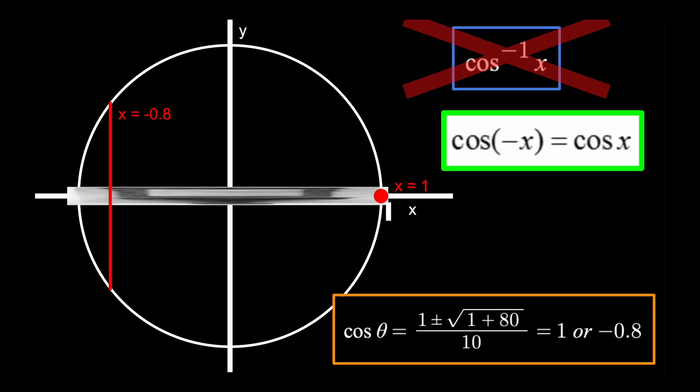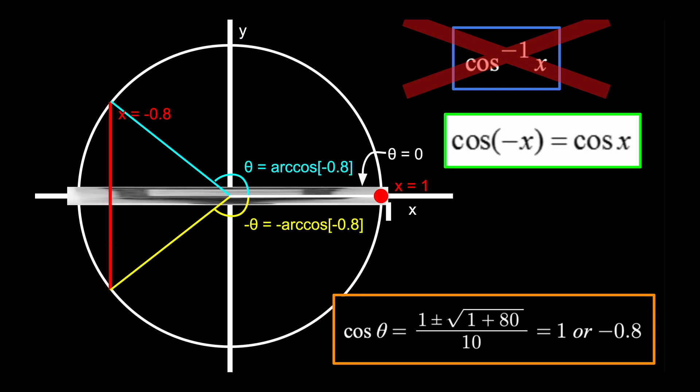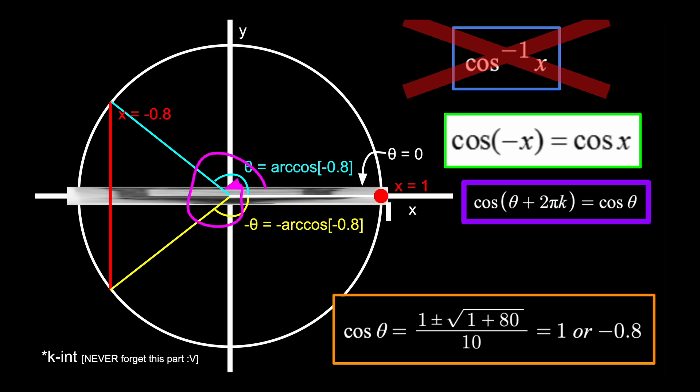However, we can use this mirror to get the other unit circle solution, and find the rest of the solutions because of the infinite amount of coterminal angles at theta plus a multiple of 2 pi. And we're done!